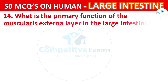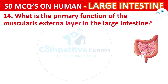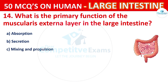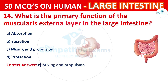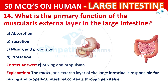Question number 14. What is the primary function of the muscularis externa layer in the large intestine? The options are: Absorption, Secretion, Mixing and propulsion, or Protection. The correct answer is C, that is Mixing and propulsion. The muscularis externa layer of the large intestine is responsible for mixing and propelling intestinal contents through peristalsis.